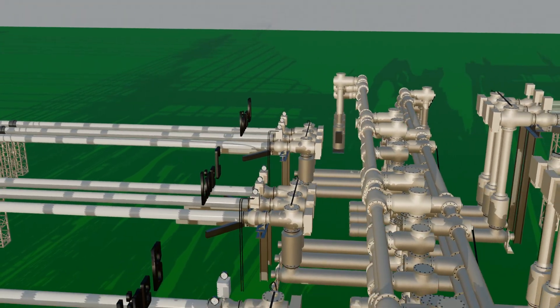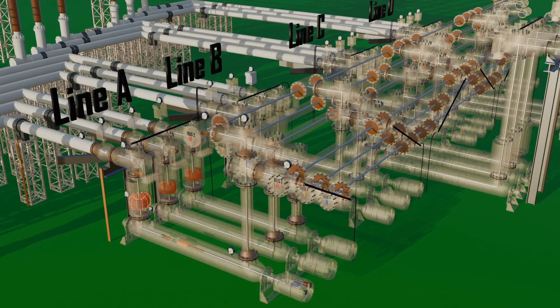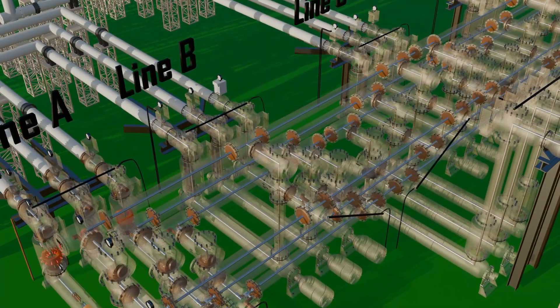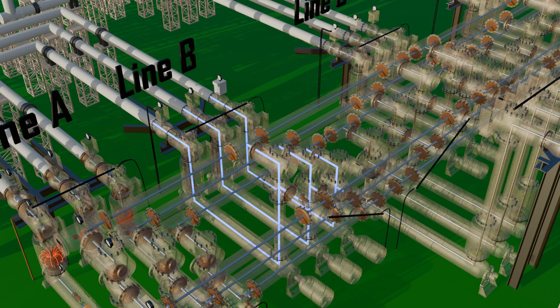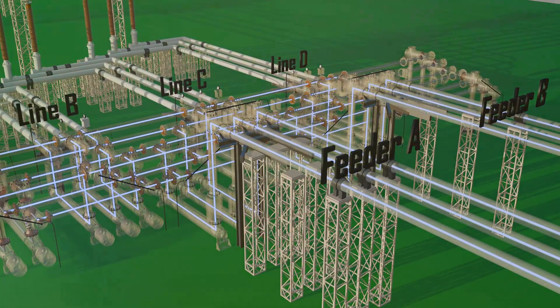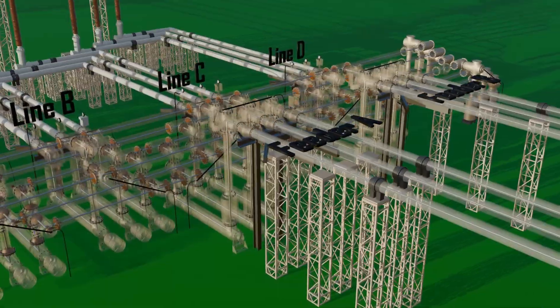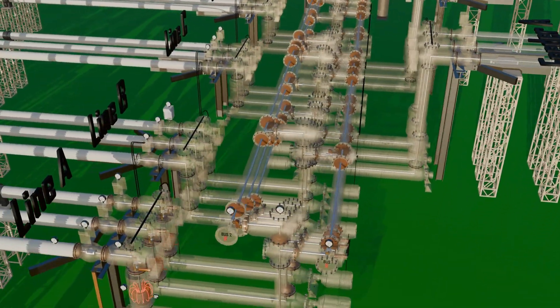Now observe carefully. Suppose a fault occurs on incoming line A. In that case, the circuit breaker of incoming line B is closed, which energizes the main bus. This allows supply to continue to the outgoing feeders without interruption. If power demand increases, both incoming line A and incoming line B may need to operate together.